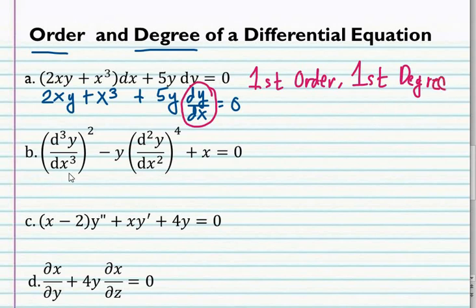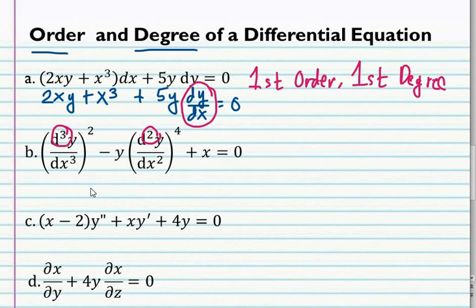Next, letter b: we have the third derivative of y with respect to x squared minus y, second derivative of y with respect to x raised to 4, plus x is equal to 0. Here we have two orders — the third derivative and the second derivative. So the highest order that appears in the equation is the third derivative of y with respect to x. Therefore, this is third order.